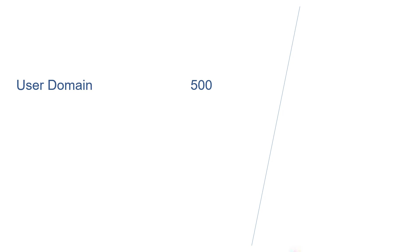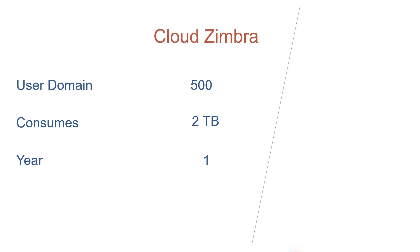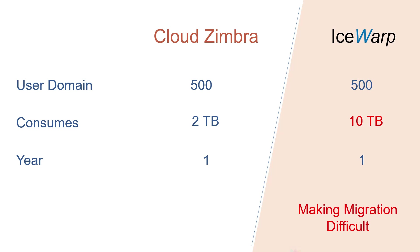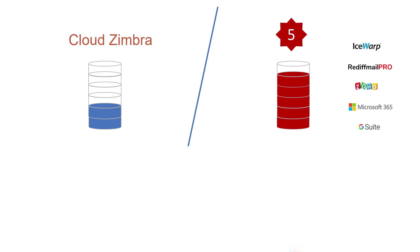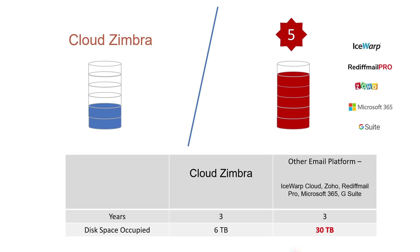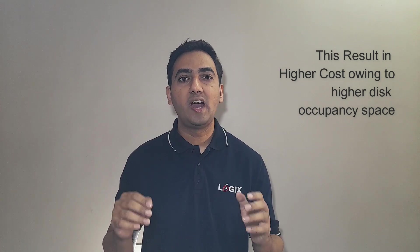iSwap consumes more than 5 times the disk occupancy space as compared to cloud Zimbra. A 500-user domain consumes 2 TB on cloud Zimbra, while on iSwap the disk space occupancy will be around 10 TB, making migration difficult. The other emailing platforms compared to cloud Zimbra consume 5 times the disk space. In a span of 3 years, where cloud Zimbra consumes 6 TB, the other email solution will occupy 30 TB of space. This results in paying higher costs owing to the higher disk occupancy space.